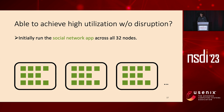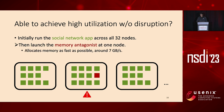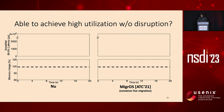First, we conduct an end-to-end experiment to find out if we can achieve high utilization without performance disruption. Initially, we run the social network application across all 32 machines. Then we launch a memory antagonist at one machine to generate intense memory pressure — it simply allocates memory as quickly as Linux permits, generating a memory consumption rate around 7 gigabytes per second, arguably the toughest resource pressure you could encounter in practice. As the machine starts to run out of resource, the runtime quickly detects memory pressure and reactively migrates proclets from the overloaded machine to other machines.